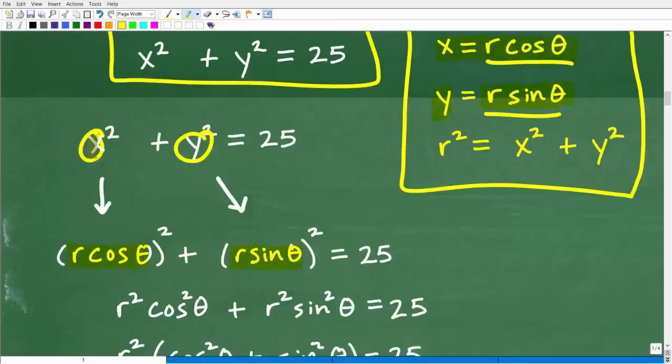Y squared is the same thing as r sine theta because y is equal to r sine theta. Again, what we're doing is we're going from x's into polar form. We're going from rectangular into polar form by replacing the x and y's with their polar form equivalents. Okay. So r cosine theta squared plus r sine theta squared is equal to 25.